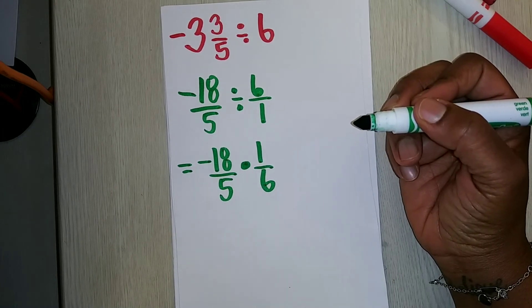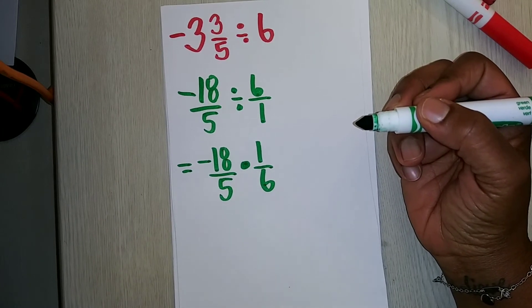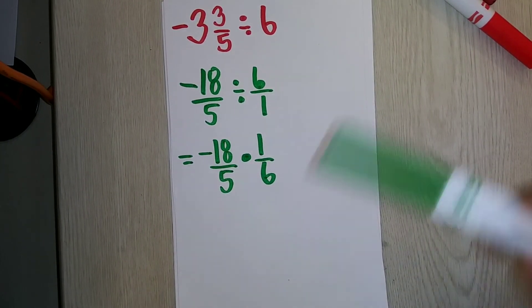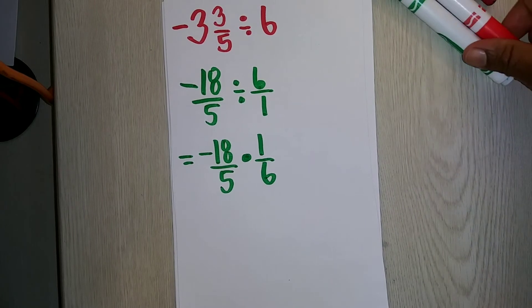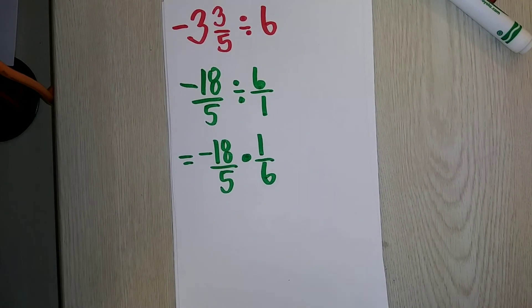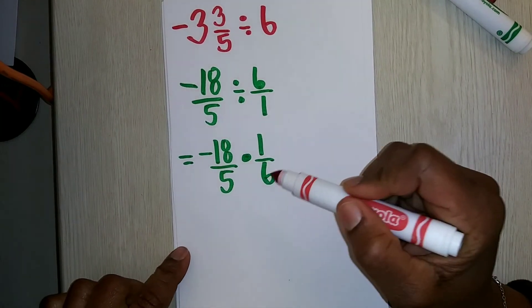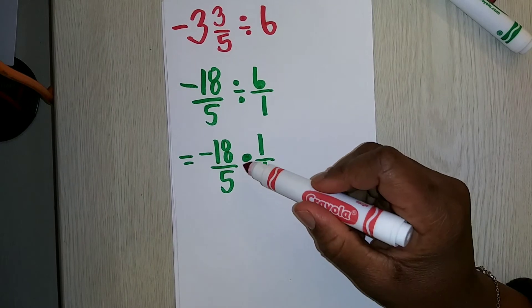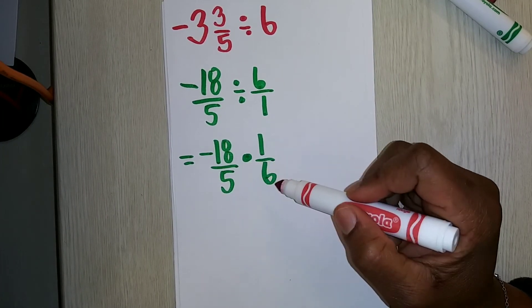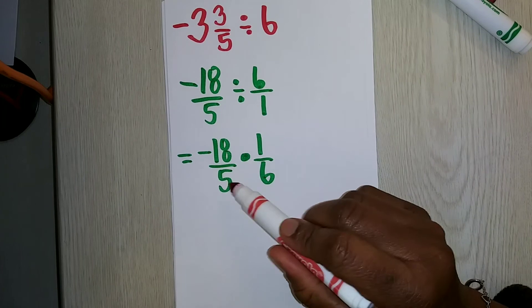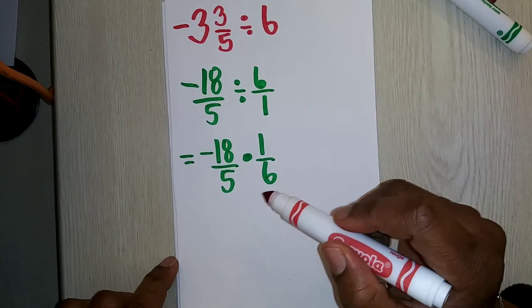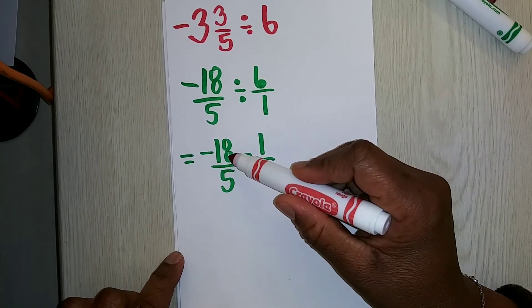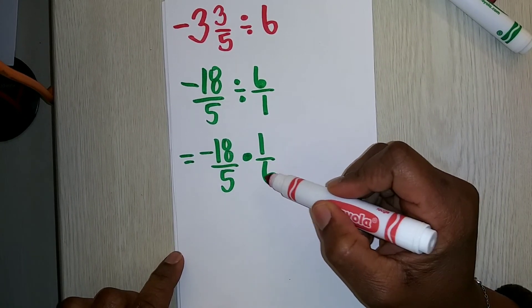Now I have multiplication, and I am going to extend what I know about multiplying rational numbers in order to solve this problem. When we multiply fractions, you can multiply numerator and numerator and denominator and denominator. What I'm going to do in this case is I'm going to simplify before I multiply numerator and numerator and my denominators. 18 and 6 both have a common factor of 6.